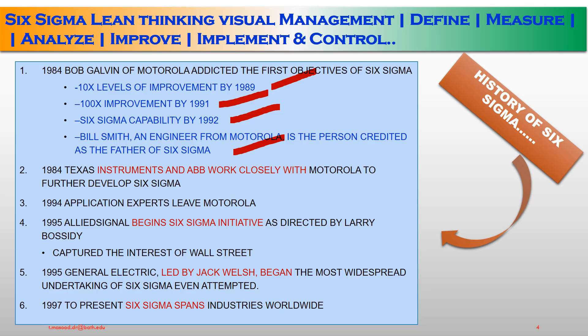In 1984, Texas Instruments and ABB worked closely with Motorola to further develop Six Sigma. In 1995, Allied Signal began Six Sigma initiatives as directed by Larry Bossidy, which captured the interest of the Wall Street Journal. Also in 1995, a journal initiative led by Jack Welch began the most widespread undertaking of Six Sigma ever attempted. From 1997 to present, Six Sigma spans industries worldwide.